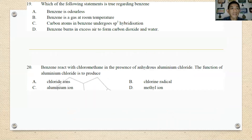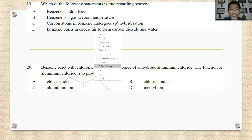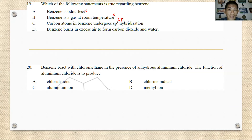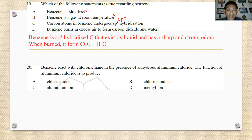Number nineteen: which statement is true regarding benzene? Benzene is odourless — wrong, benzene has a very sharp smell, like mothballs. Benzene is a gas — no, it is a liquid at room temperature. Carbon atoms in benzene undergo sp3 hybridization — no, it is sp2. When benzene burns in excess air, you form carbon dioxide and water — correct. The best answer is D.